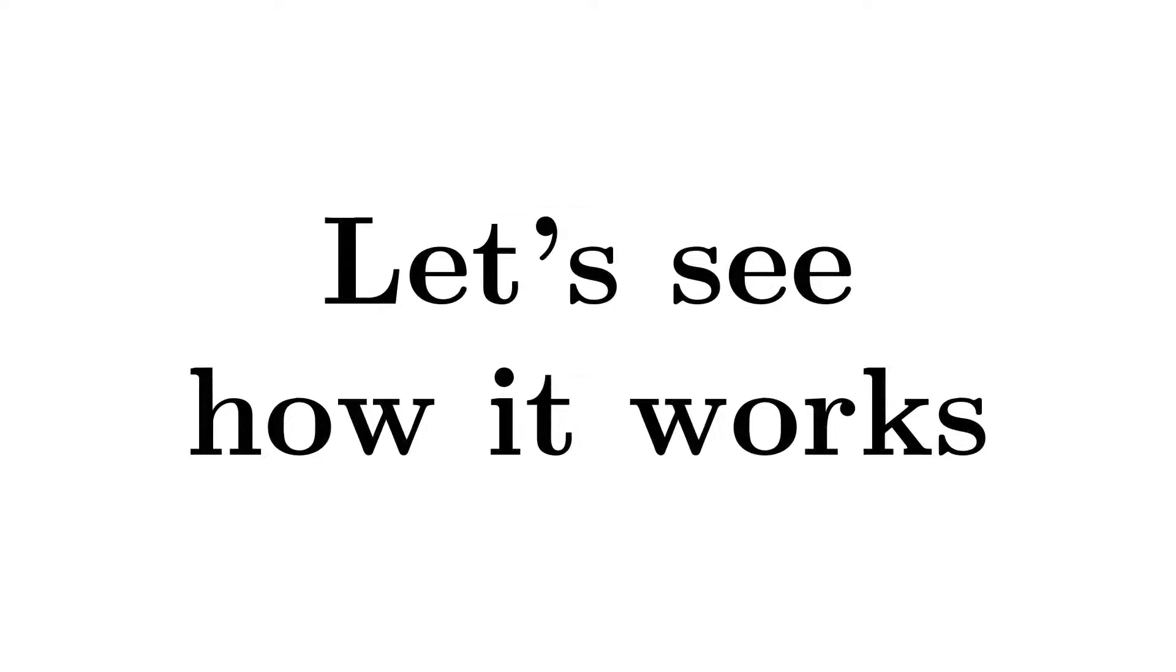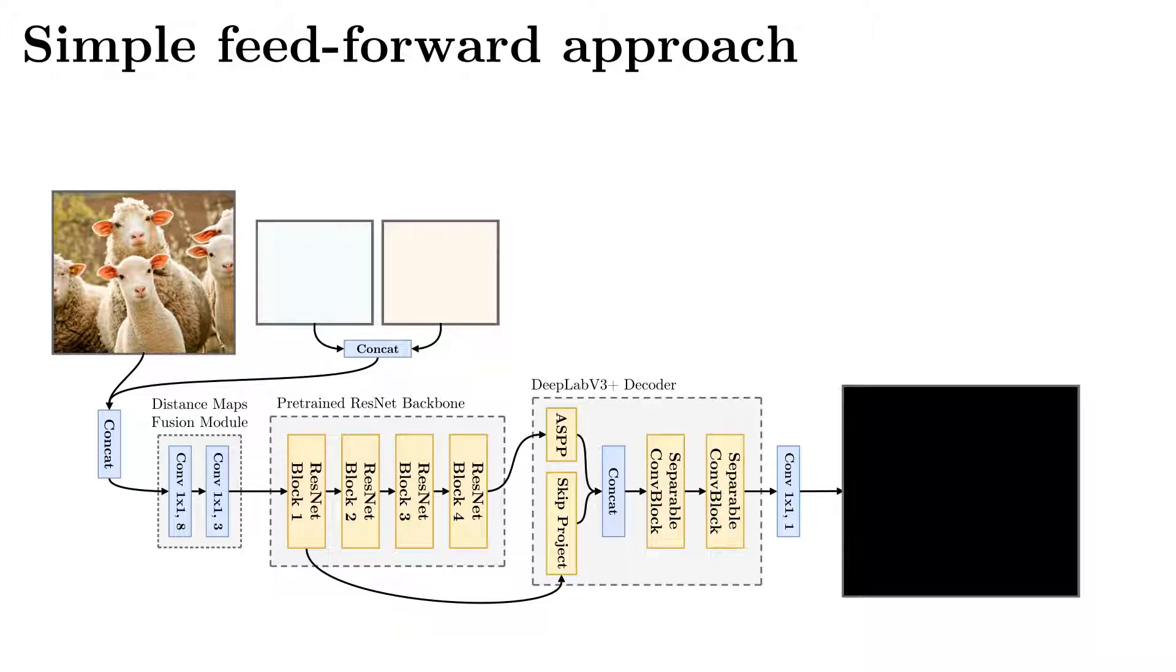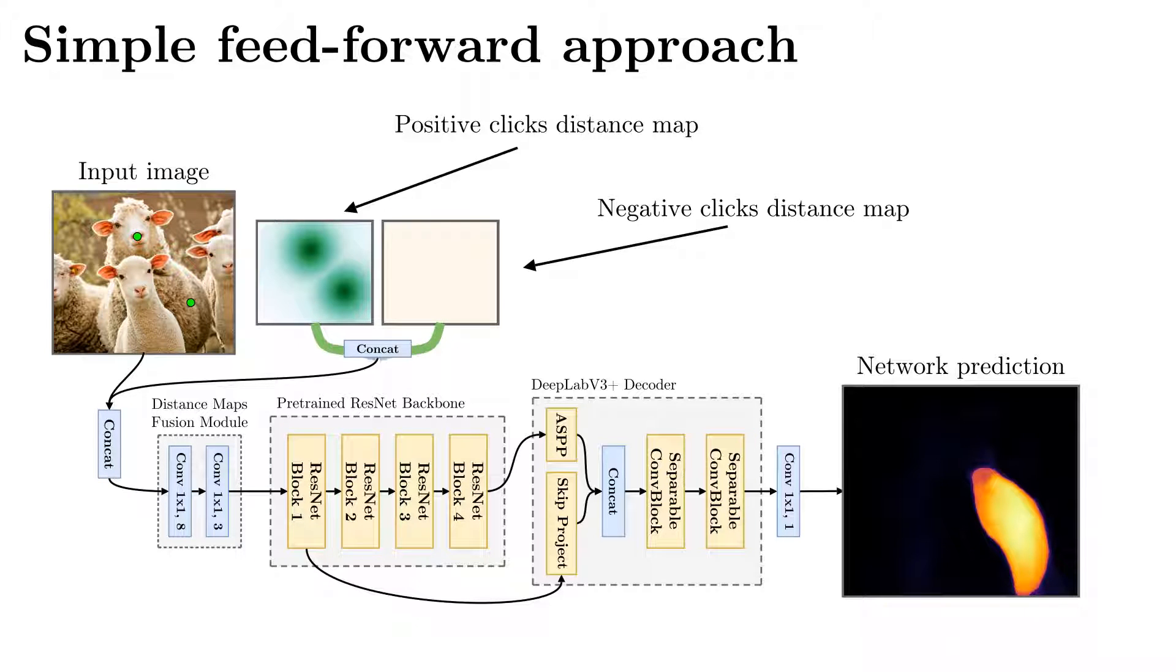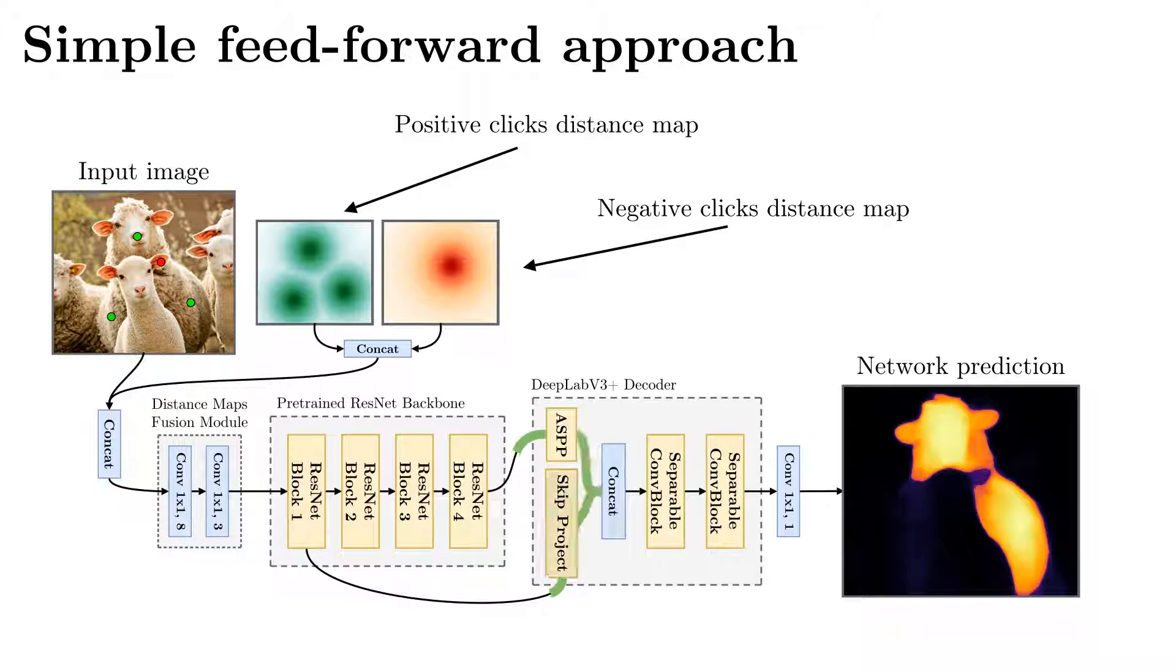Let us see the details. The majority of click-based interactive segmentation algorithms have the backbone pre-trained on ImageNet. The backbone inputs an image and concatenated distance maps of positive and negative clicks. As an output, the model generates the segmentation mask for an object of interest. However, it is impossible to modify the network's response.